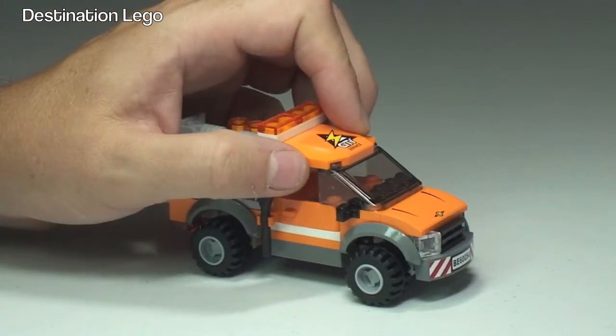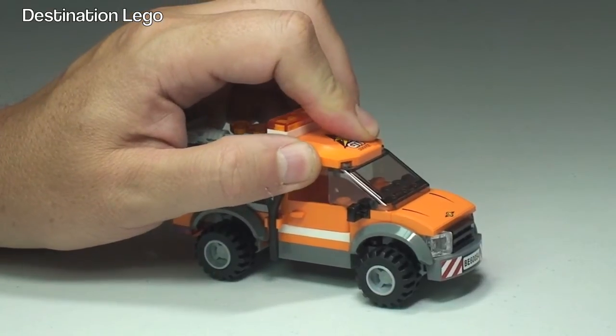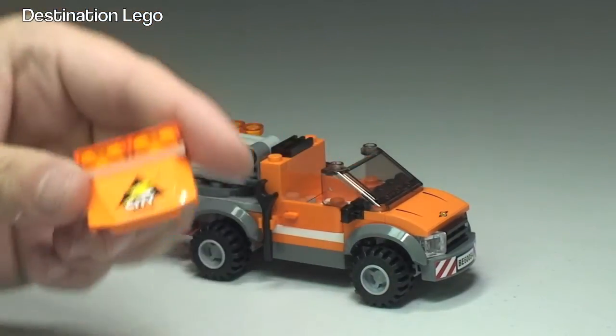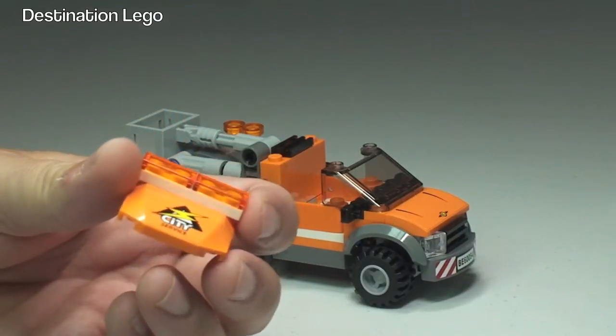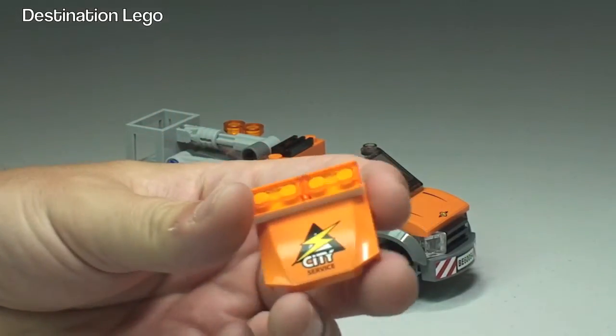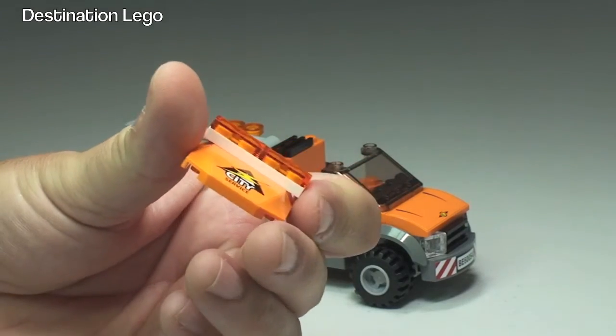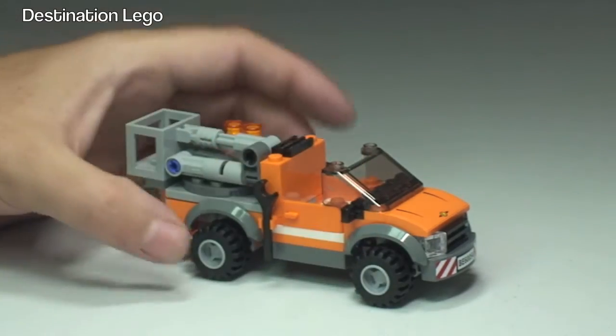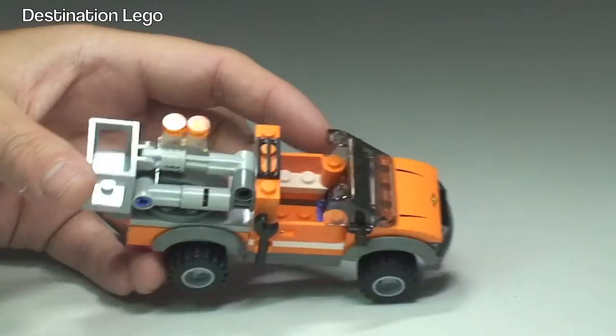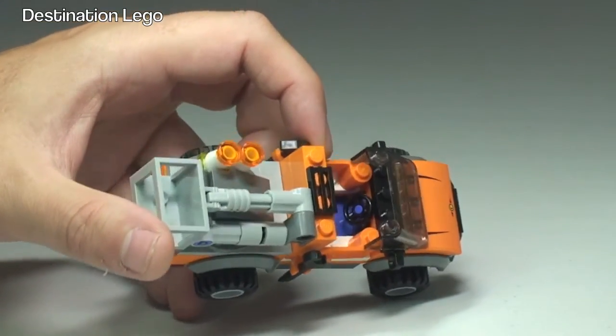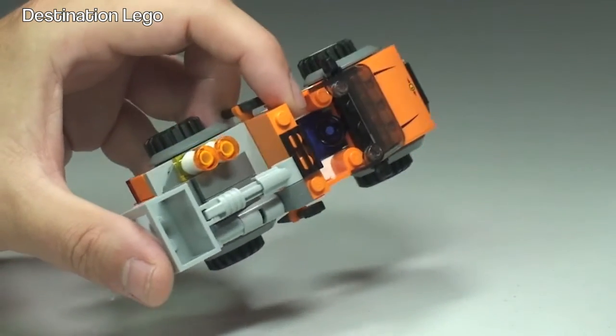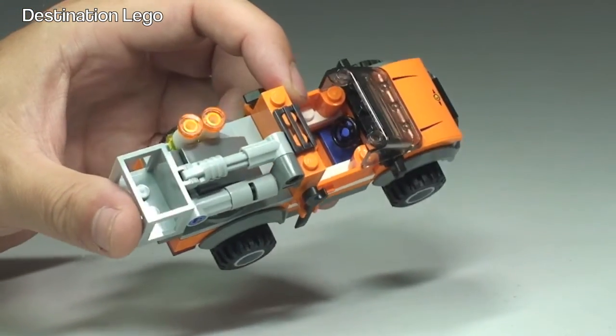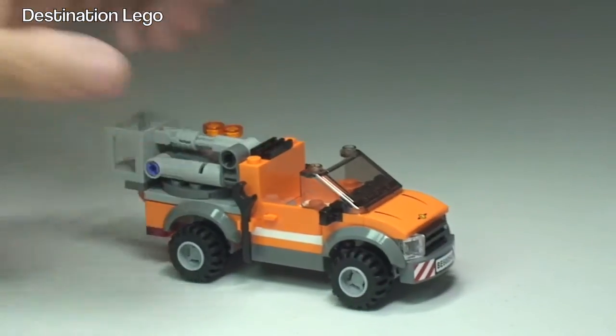So we can quite easily, like most of these vehicles, remove the roof like so. There is the roof piece and on top of that we can see we have the flashing amber lights to represent a work vehicle. So we can put that to one side. Just tipping that over there, we can see the only thing in there is space to sit a minifigure and then down there at the front there is a blue steering wheel.